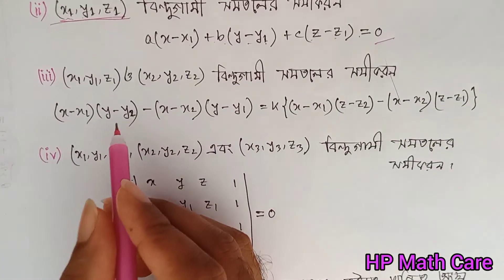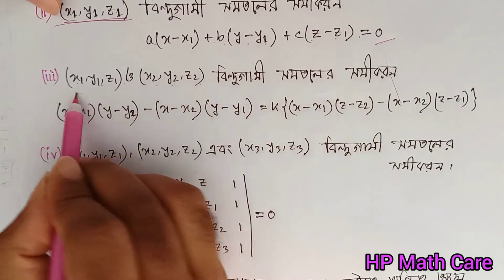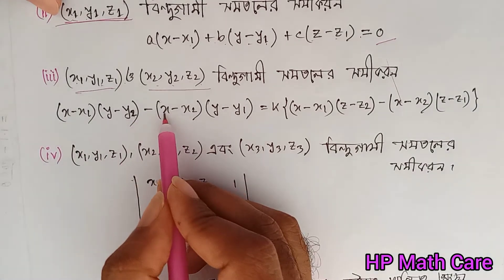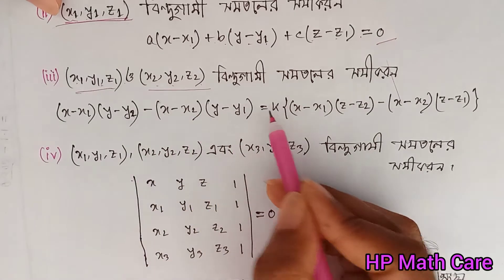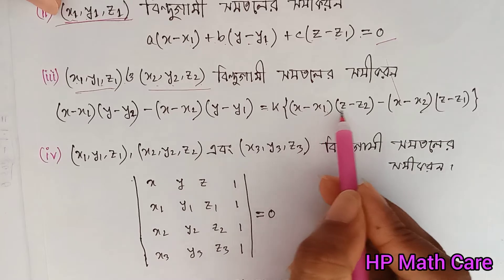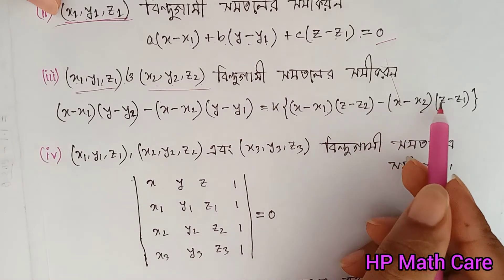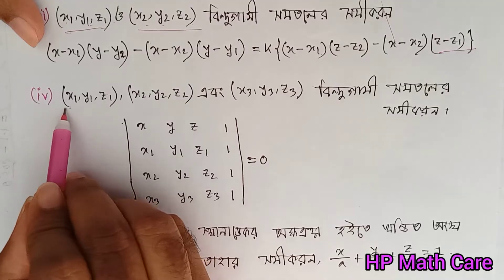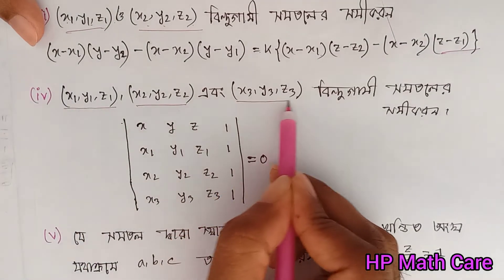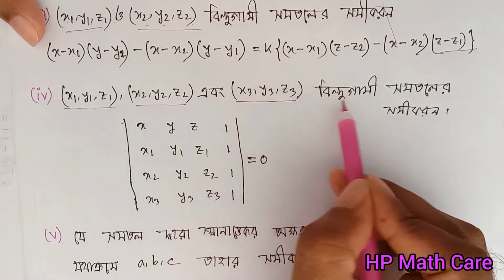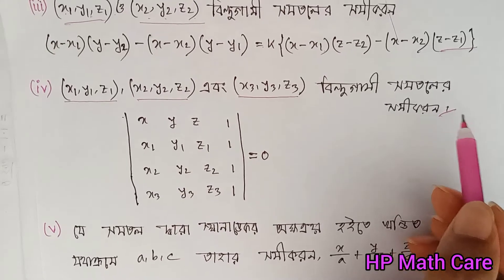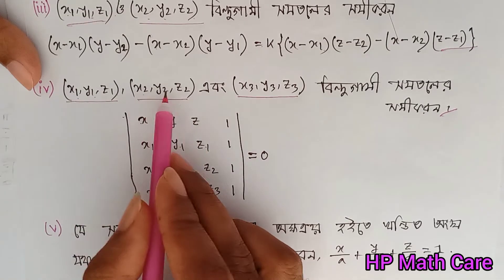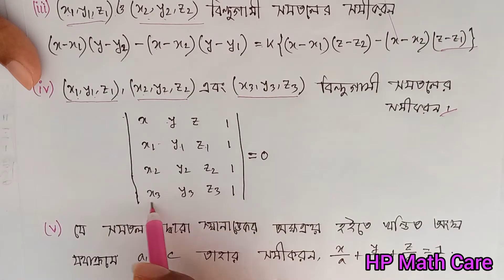Let's see x1, y1, z1 and x2, y2, z2. Let's see x minus x1 into y minus y2, x minus x2 into y minus y2, x minus x2 into y minus y1. Here you can see x1, y1, z1; x2, y2, z2; and x3, y3, z3. We can see the three points: x, y, z. Let's see x1, y1, z1; x2, y2, z2; x3, y3, z3.